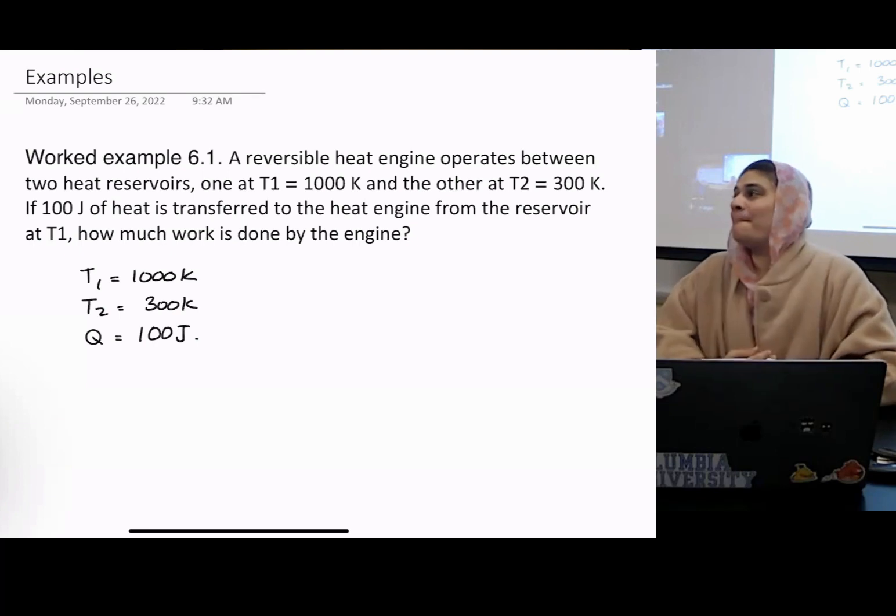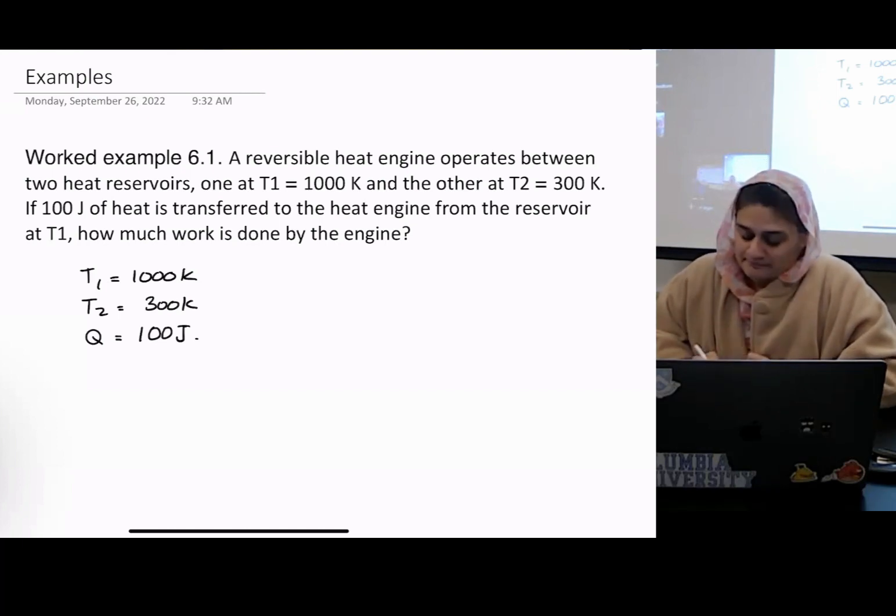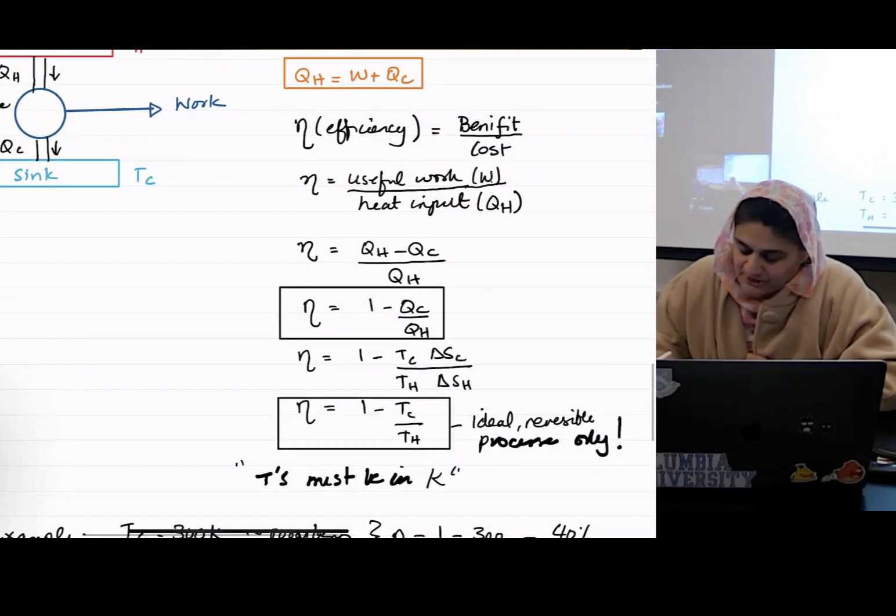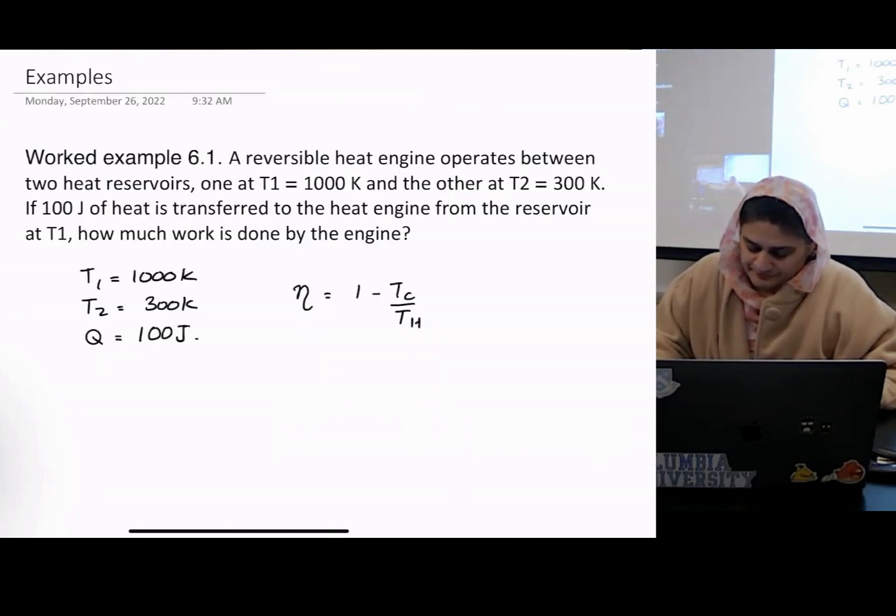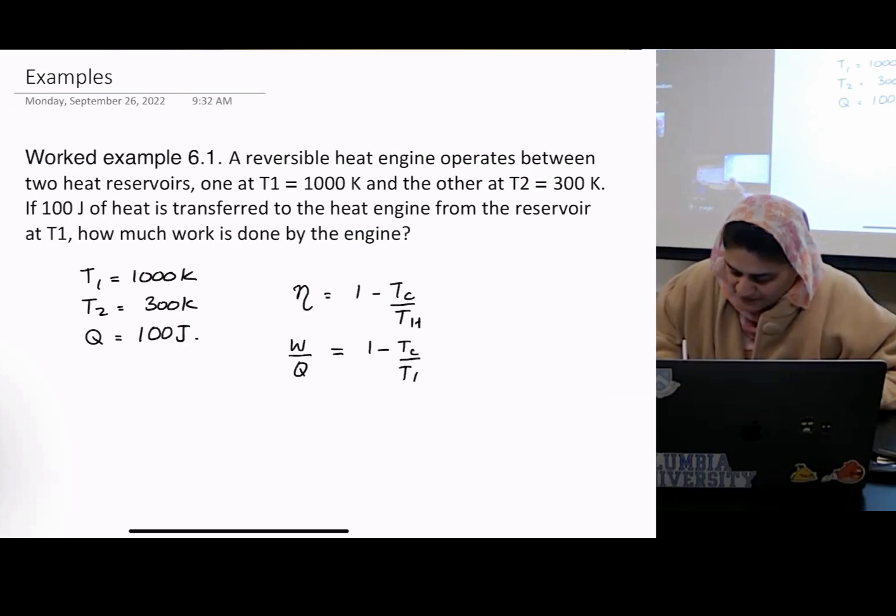Okay, what do I do? Eta was 1 minus Tc divided by Th, and eta was also equal to W over Q. So W over Q equals 1 minus Tc over Th. Work divided by 100 equals 1 minus 300 divided by 1,000 Kelvin.